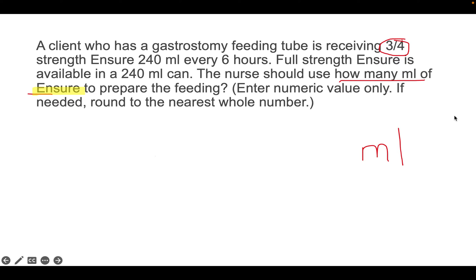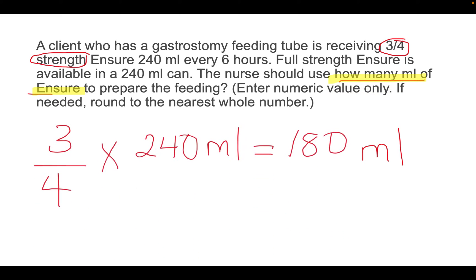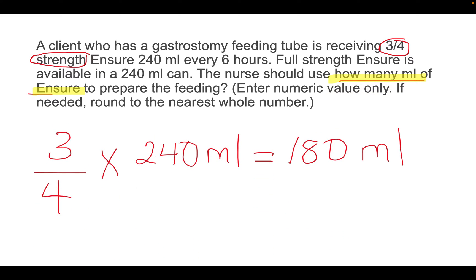The next thing I highlight is three-quarter strength of the Ensure. To work out this problem, you take three-quarters and multiply by 240 ml, and that gives you 180 ml. If you got 180 ml, you are correct.